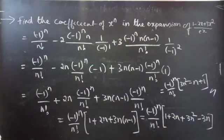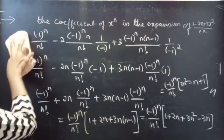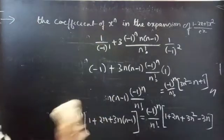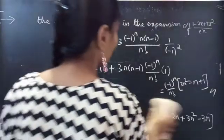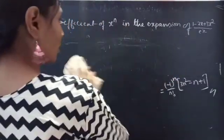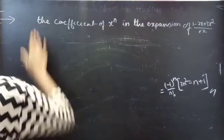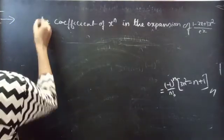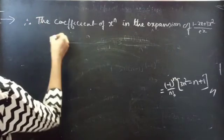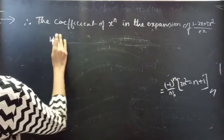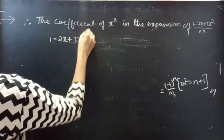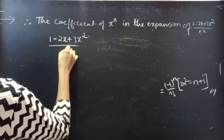So this completes the problem. The coefficient of x power n in the expansion of 1 minus 2x plus 3x square by e power x is minus 1 power n by n factorial into 3n square minus n plus 1.